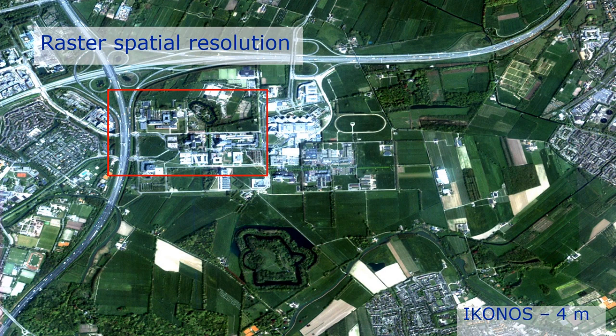When we look at the IKONOS image, which has a spatial resolution of 4 meters, we can further zoom in on the campus of Utrecht University. Here we can distinguish different features, such as a fortress in the south of this image and the different buildings of the campus. We can even see cars on the highway.